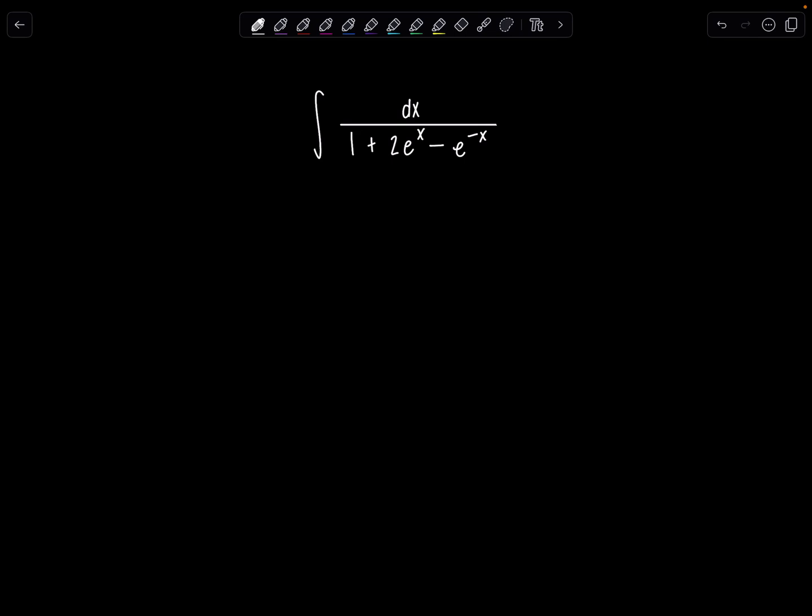I'm going to use a u substitution first, and I'm just going to let u equal e to the x. So let's let u equal e to the x. Then that means du would be e to the x dx. But I'm noticing here I don't have an e to the x up in the numerator with dx. So let's rearrange things. That means du over e to the x is dx.